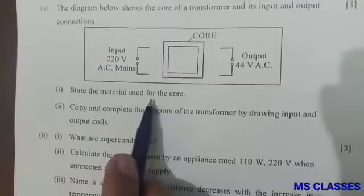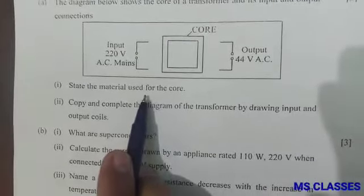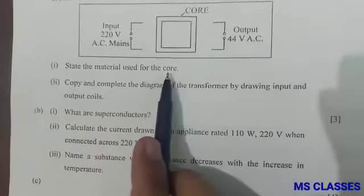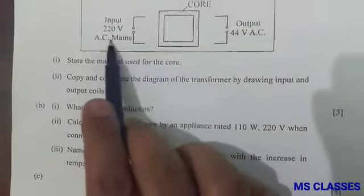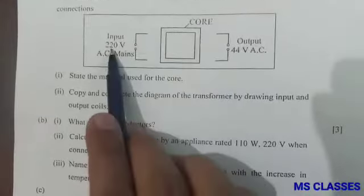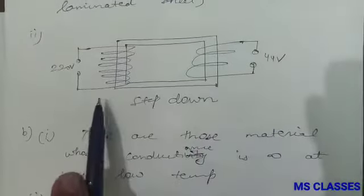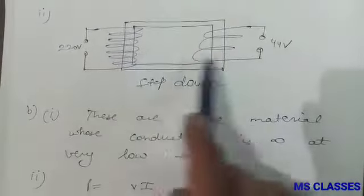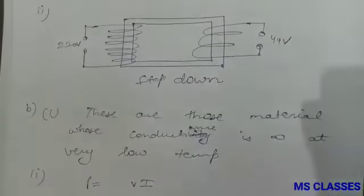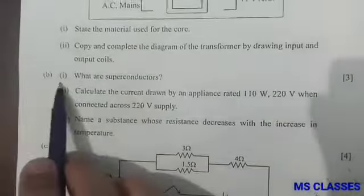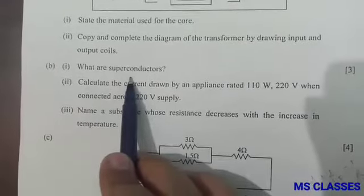Question 8(a): State the material used for the core. We use soft iron core made of thin laminated sheets. Copy and complete the diagram of the transformer. As you can see, this is step-down transformer because this is 220 volts and the output is 44 volts, so we can complete the diagram like this because if it is step-down, the primary turns have to be greater than that of secondary turns.